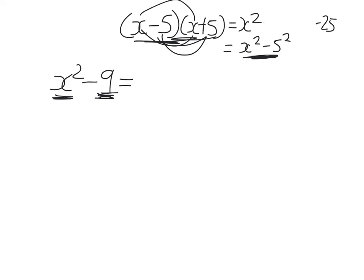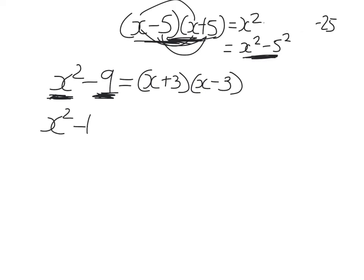I'm going to use difference of two squares. When you have a square minus a square, you get two brackets. Take the square root of the first term — square root of x squared is x. Take the square root of the second term — one bracket gets a plus, one gets a minus. We're just undoing what was done when we expanded using FOIL. So x squared minus 9 factorizes to (x + 3)(x − 3). Similarly, x squared minus 16: two brackets, square root of x squared is x, square root of 16 is 4 — one plus, one minus — giving (x + 4)(x − 4).